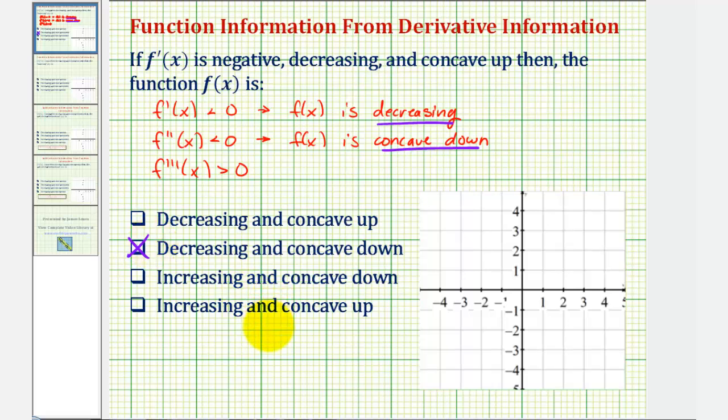Now, let's see if we can sketch a possible graph for f of x. Well, if f of x is decreasing, we know from left to right the graph is going downhill.